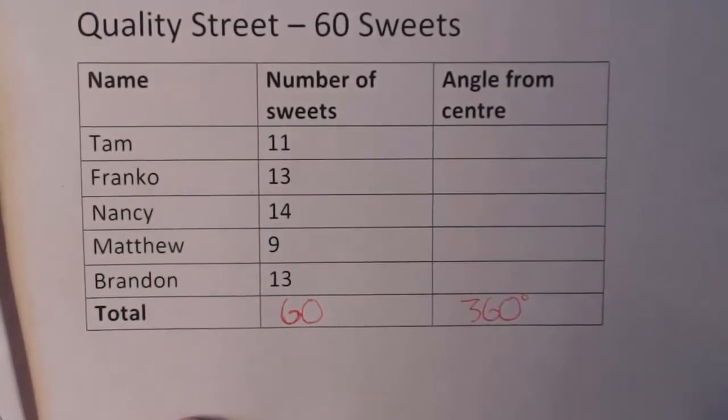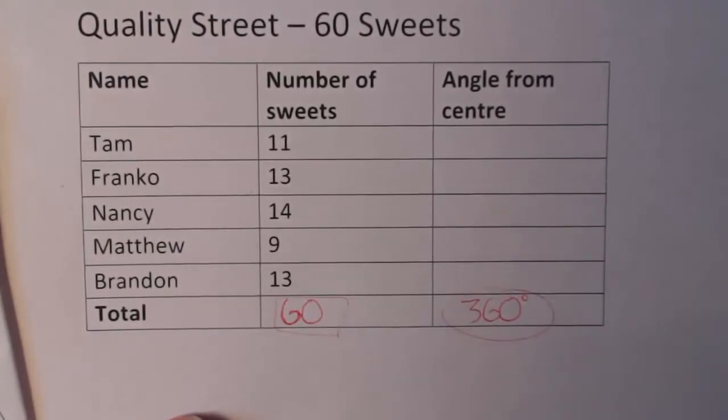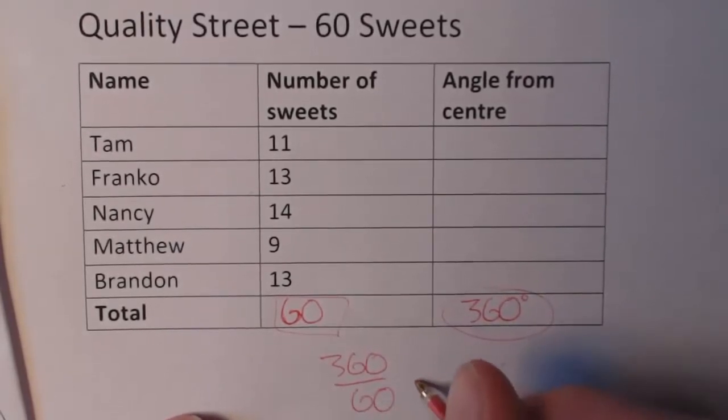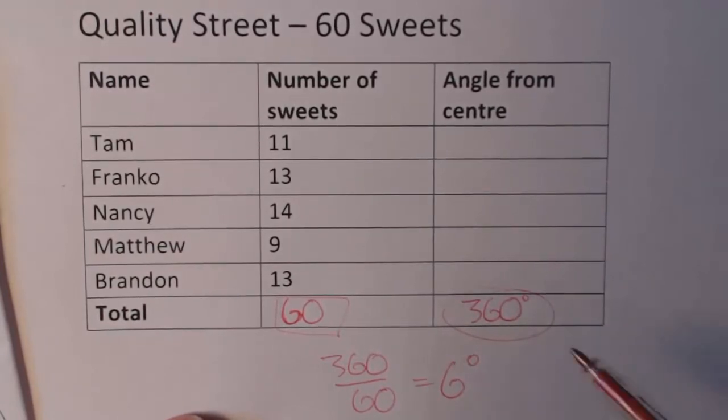To do that, you know there's 360 degrees in a circle, you know there's 60 sweets, so we need to actually work out what each sweet is allocated degree-wise. To do that we go 360 divided by 60 and that equals 6 degrees. So basically each sweet is allocated a 6-degree wedge of this pie chart.